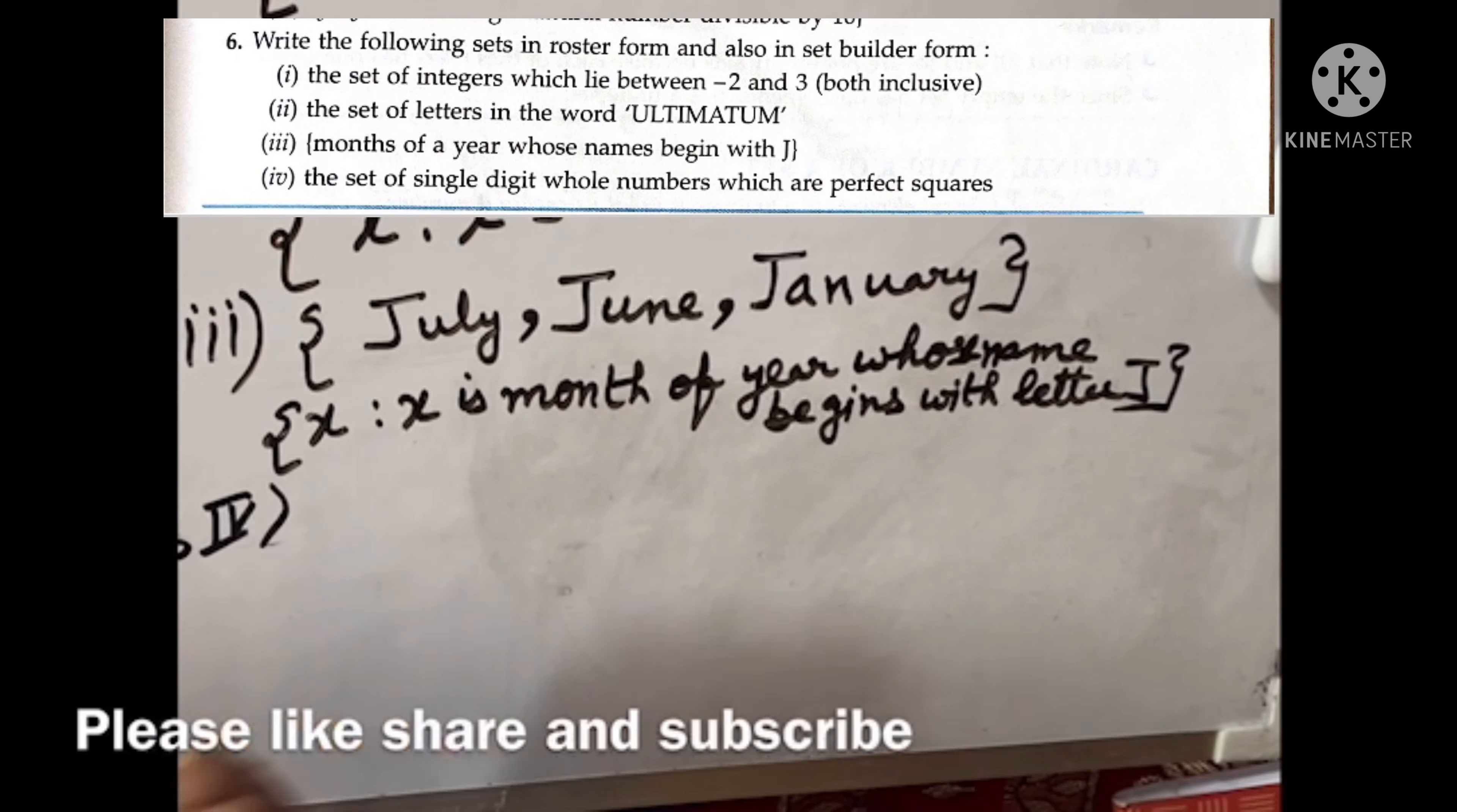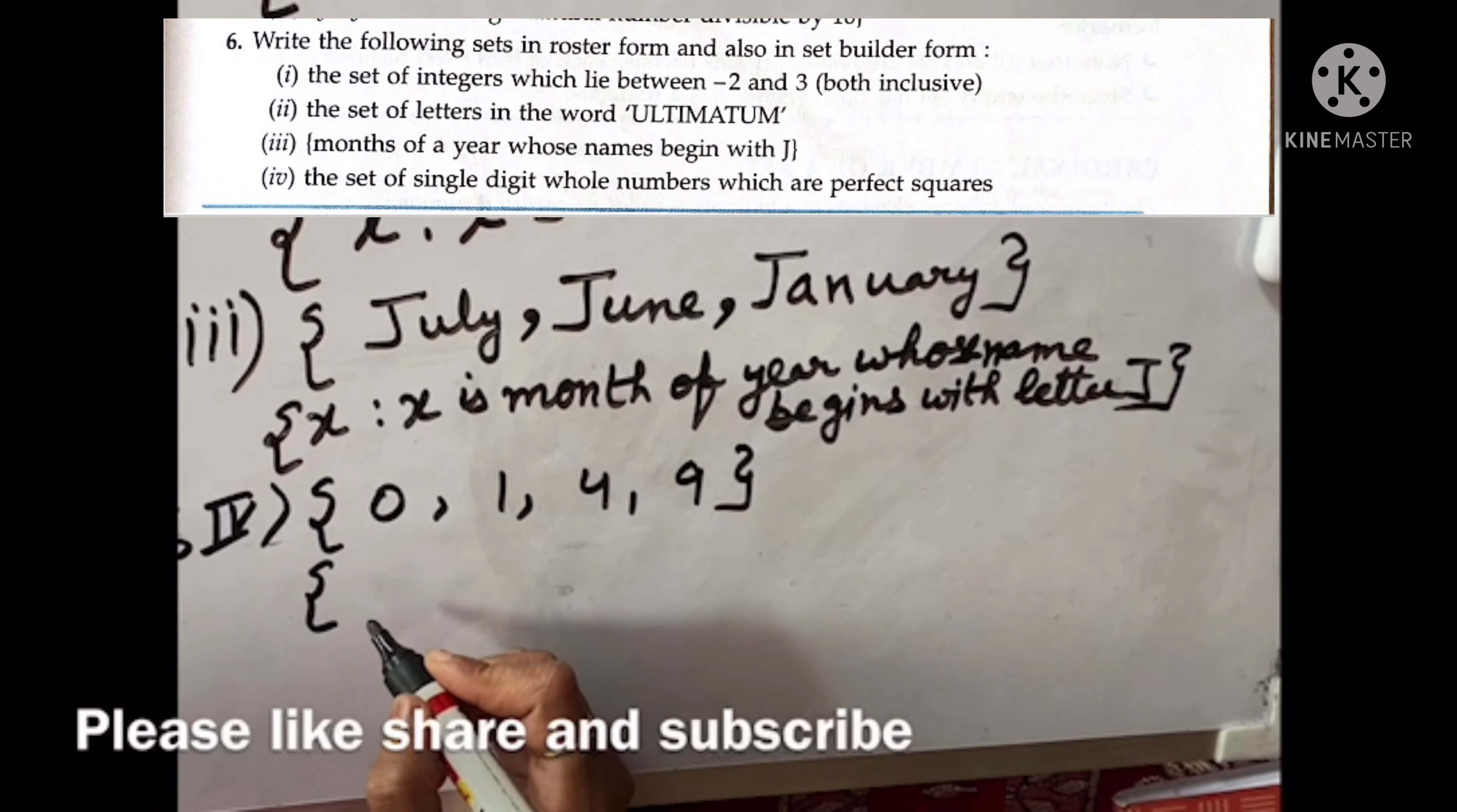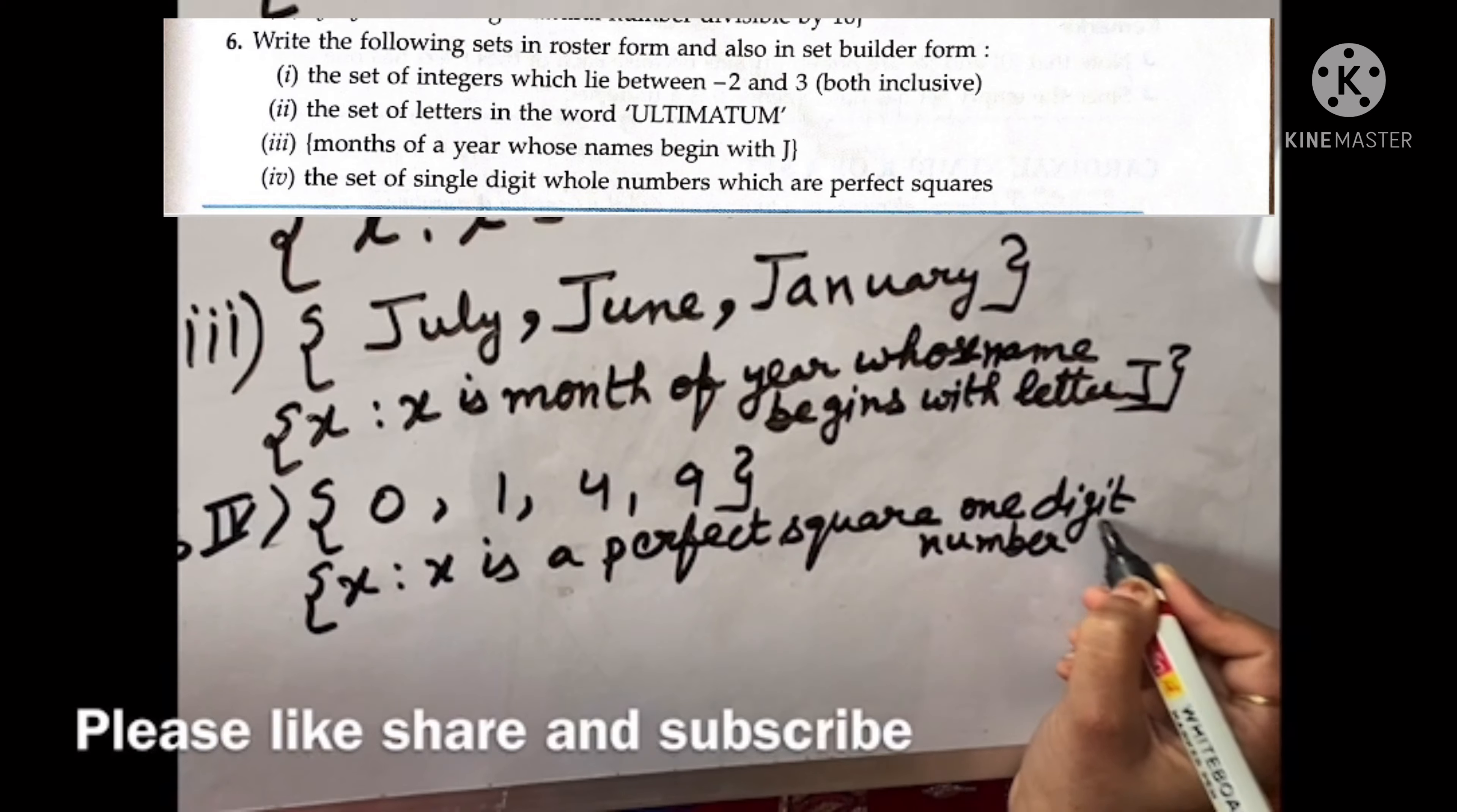Sixth question fourth part. What is the question? This set of single digit whole numbers which are perfect square. So single digit whole numbers perfect square: 0, 1, 4, and 9. So these are the four digits which are of single digit and are perfect squares. Then X, where X is kya hai? X is a perfect square, one digit number. And close the bracket.